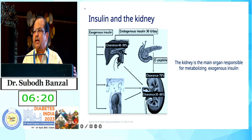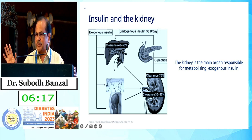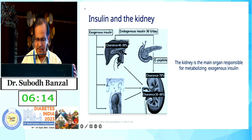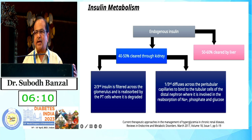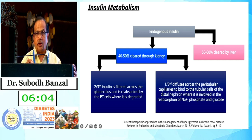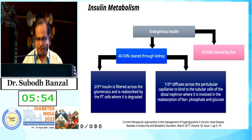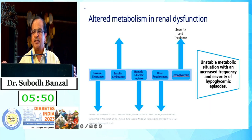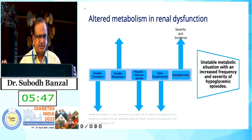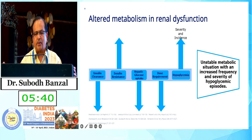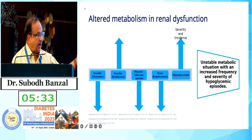Insulin metabolism: the kidney is a major organ responsible for insulin metabolism. The liver accounts for 50 to 60 percent and the kidney for about 40 percent. Two-thirds of filtered insulin is destroyed in the proximal tubule, and one-third is reabsorbed and active in the distal tubule for sodium, phosphate, and glucose reabsorption. In CKD, insulin clearance decreases, insulin resistance increases, hepatic glucose uptake is less, insulin requirements may fall, and hypoglycemia risk increases.